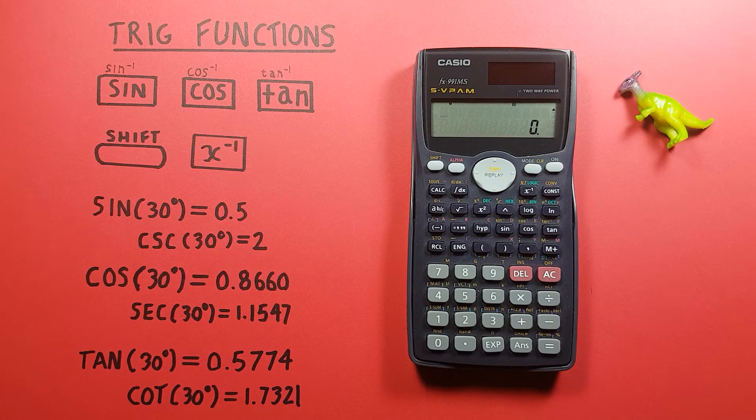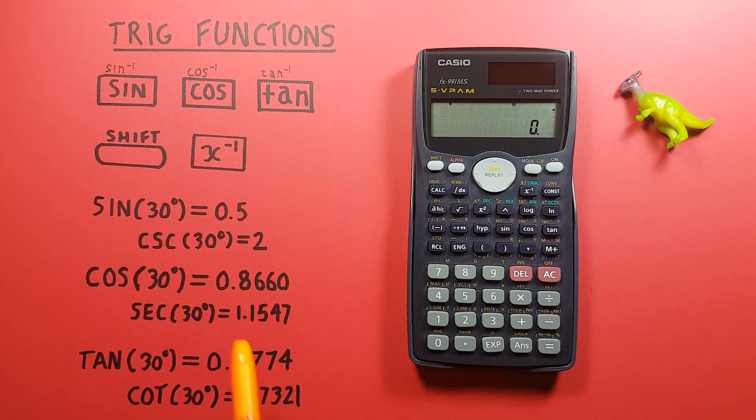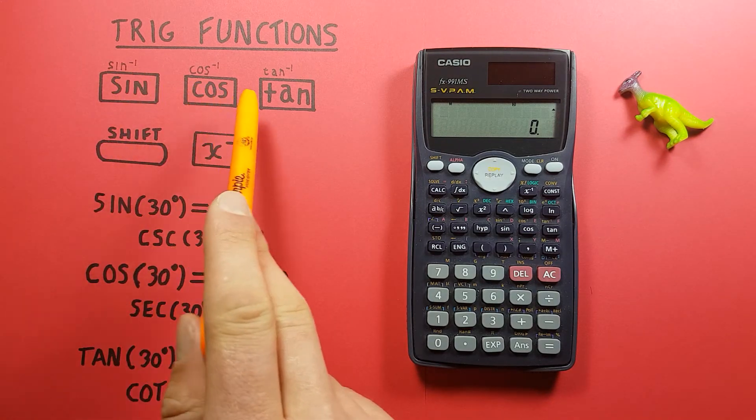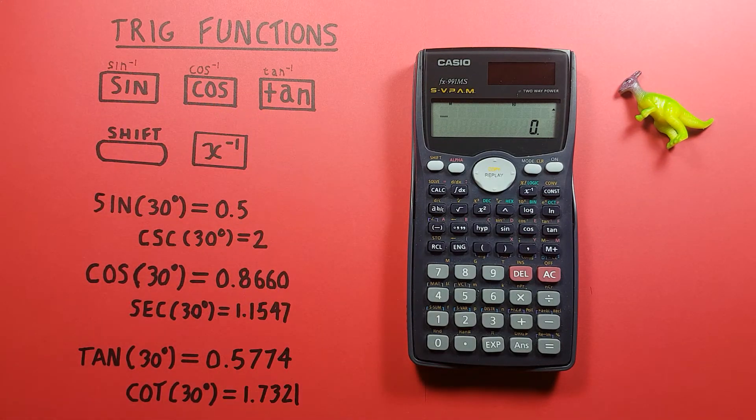What about arc sine, arc cos and arc tan? Well these are actually represented by the sine minus 1, cos minus 1 and tan minus 1 that are the shift functions on our sine, cos and tan keys.